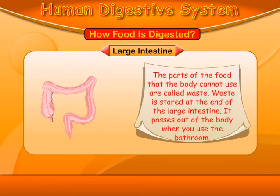Large intestine. The parts of the food that the body cannot use are called waste. Waste is stored at the end of the large intestine. It passes out of the body when you use the bathroom.